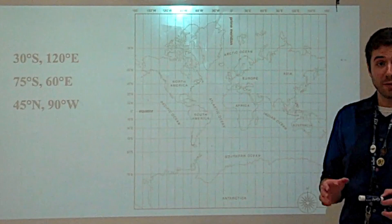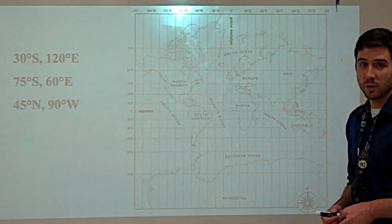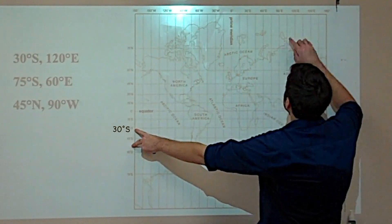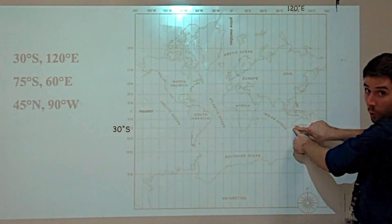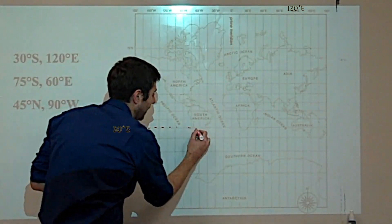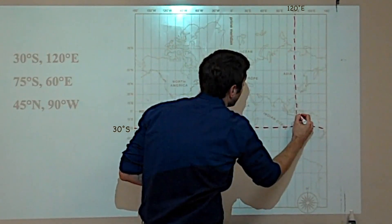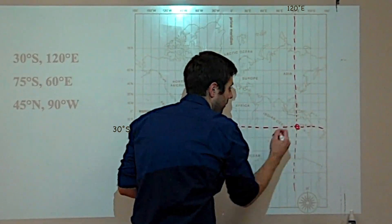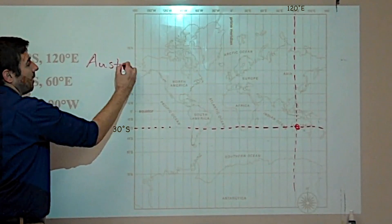Let's quickly graph a few real-life locations. 30 degrees south, 120 degrees east — where would that be? I could take my fingers and put it at 30 degrees south, 120 degrees east, and then just trace those lines till they meet. Or I could take a ruler, or just draw little dotted lines, and find where they intersect. So 30 degrees south, 120 degrees east would be in Australia.